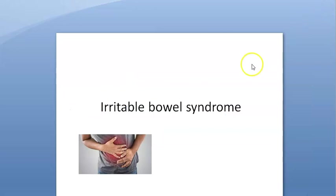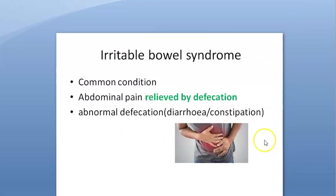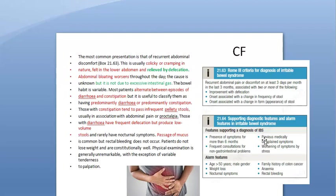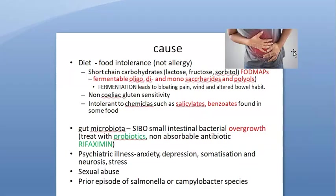In summary: IBS is a common condition with abdominal pain relieved by defecation, and either diarrhea or constipation. It is classified as predominantly diarrhea or predominantly constipation. The Rome 3 criteria require that over three months, at least three days per month the patient has abdominal pain improving with defecation, with a change in stool frequency and form. Rule out colorectal cancer based on alarming features.